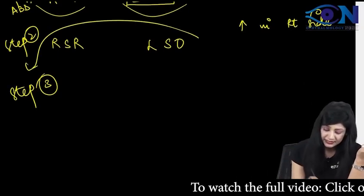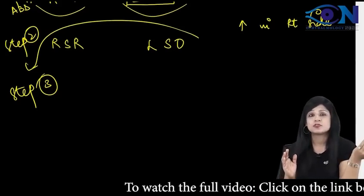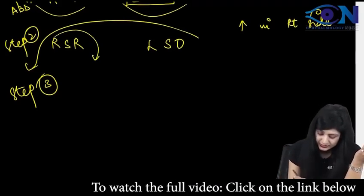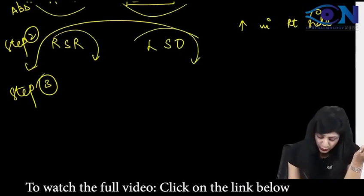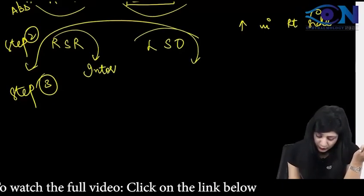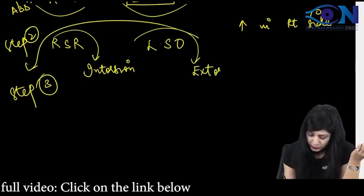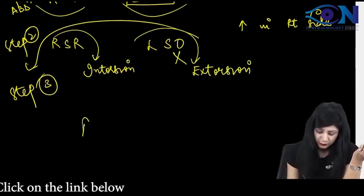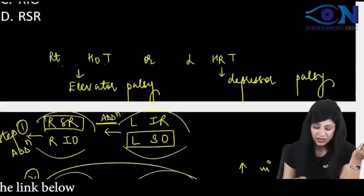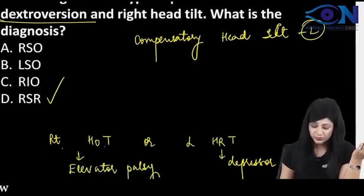We will do the right head tilt here. When I do right head tilt, both eyes will go towards left. We will have intorsion of the right eye and extorsion of the left eye. Superior oblique cannot extort, and therefore the answer will be right superior rectus. This is how we get the answer as right superior rectus.